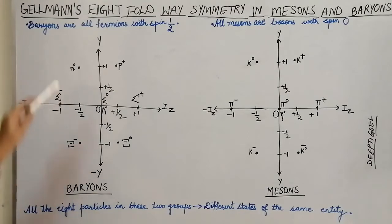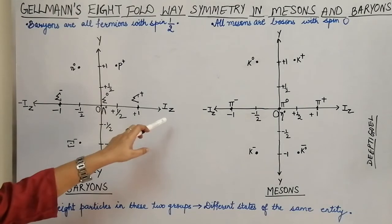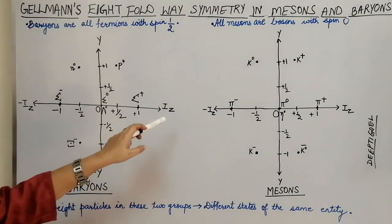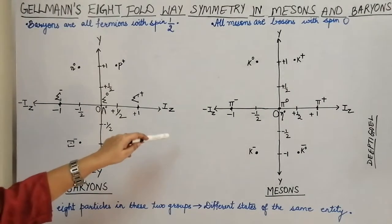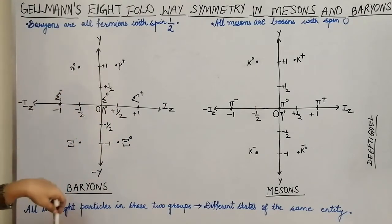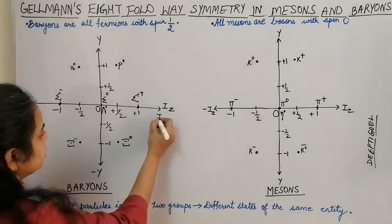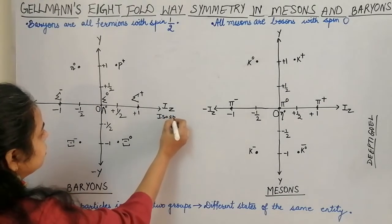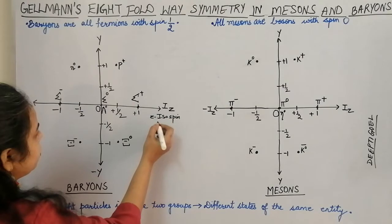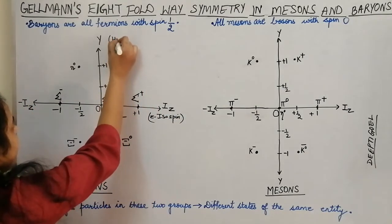Here we have represented on the graph: on the x-axis we have the isotopic spin — the z-component of the isospin, that is Iz — and on the y-axis we are representing the hypercharge Y. So Iz is the z-component of the isospin and Y is the hypercharge.